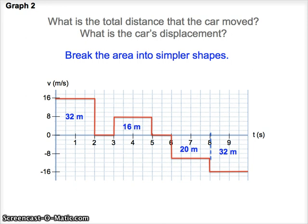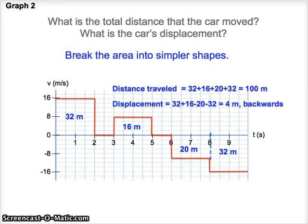We can just simply add up all the values, and that gives us the distance. Or we can take into account that the last two represent movement in the opposite direction, the negative direction. And we can use that to determine the displacement.